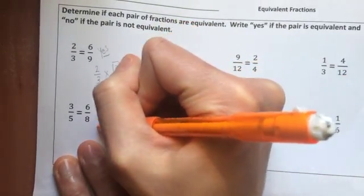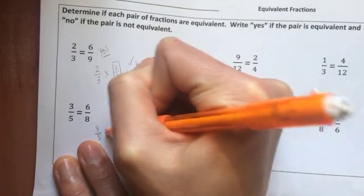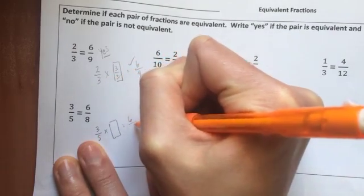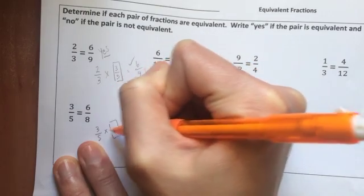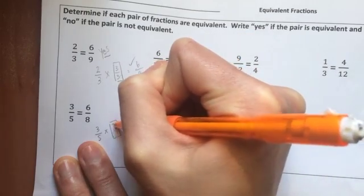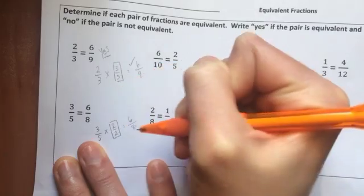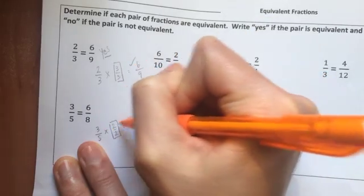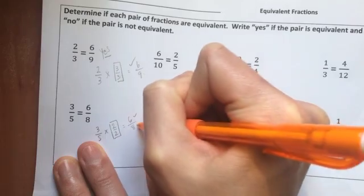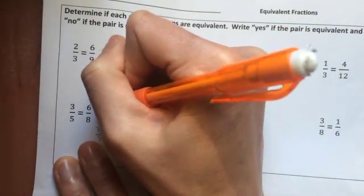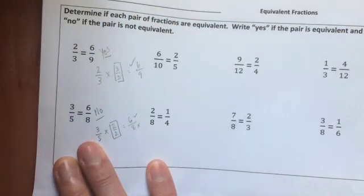Now I'm going to go down here to the bottom one. 3 fifths times what whole is going to equal 6 eighths? 3 times what is 6? 3 times 2. So that means it would have to be 2 halves. 3 times 2 is 6. That's true. 5 times 2 is not 8. So these are not equivalent. No, that would not work.